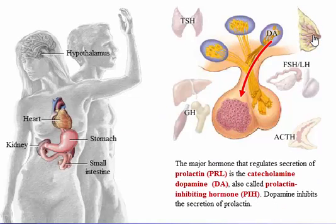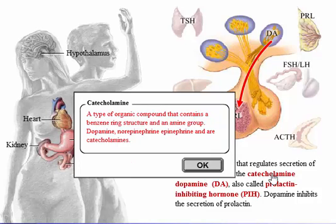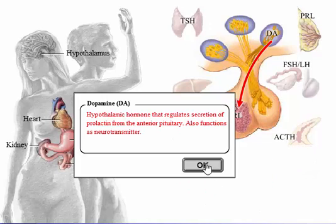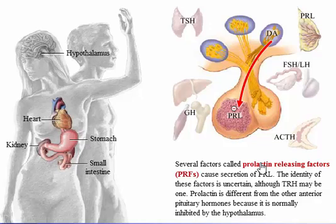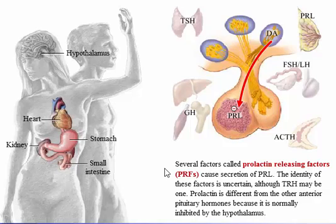The major hormone that regulates secretion of prolactin is the catecholamine dopamine, also called prolactin-inhibiting hormone. Dopamine inhibits the secretion of prolactin. Several factors called prolactin-releasing factors stimulate secretion of prolactin; the identity of these factors is uncertain, although thyrotropin-releasing hormone may be one. Prolactin is different from the other anterior pituitary hormones because it is normally inhibited by the hypothalamus.